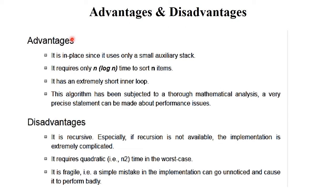Advantages of quick sort: it is in-place and uses only a small auxiliary stack, so it requires little memory. It requires O(n log n) time for n items and has an extremely short inner loop. This algorithm has been subjected to mathematical analysis and precise performance statements can be made. Disadvantages: it is recursive — you must apply it to the left and right parts — and if recursion is unavailable, implementation is extremely complicated. It requires O(n²) time in the worst case, and it is fragile — a simple implementation mistake can ruin performance.